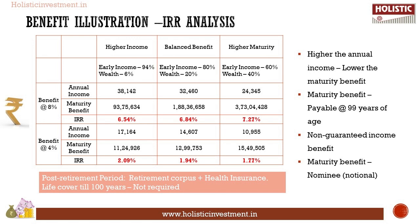Next, we shall calculate the IRR under various scenarios. The income benefit and maturity benefit under various options is given in the respective cells in the above illustration. The IRR at 8% for higher income results in 6.54%; balanced benefit 6.84%; and higher maturity 7.27%. The IRR at 4% in the above illustration: higher income returns 2.09%; balanced benefit 1.94%; higher maturity 1.77%.